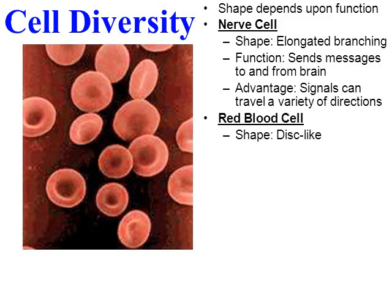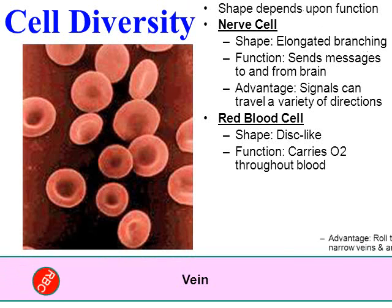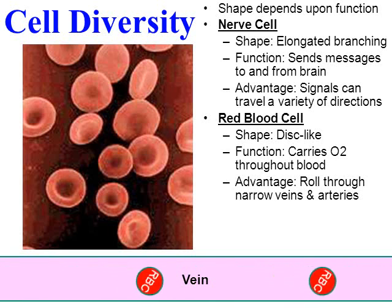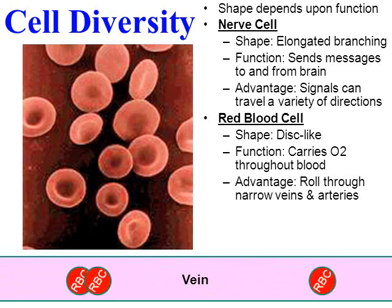Another type of cell are red blood cells — you can see they're round and disc-like in shape, which really helps them do their function of carrying oxygen throughout the blood. There's a reason we put round tires on automobiles — round tires help an automobile roll and use less energy. Here's a vein with red blood cells traveling through it. There are parts of the body where veins and arteries are so narrow that red blood cells have to travel through single file — so having round red blood cells allows them to roll and hopefully not get stuck in those narrow vessels.